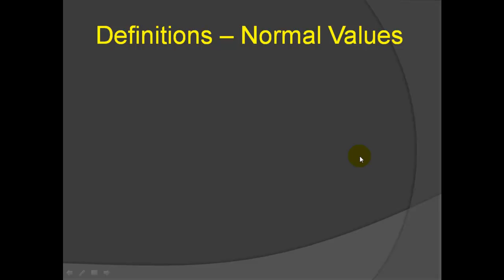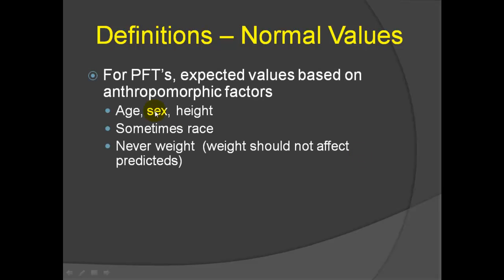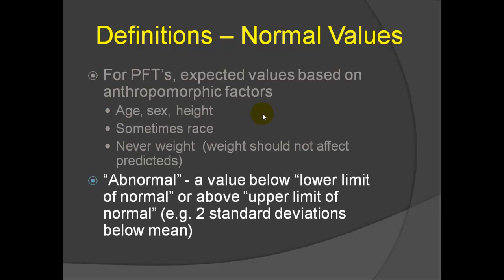Let's talk about normal values, because this is a big issue in the pulmonary lab. First and foremost, our PFT expected values are based on anthropomorphic factors: age, sex, and height, and some of the standard formulas include a race correction, because there are some anthropomorphic features of different races that change expected values. Weight never affects predicteds, primarily because if someone was to gain a hundred pounds, we wouldn't expect our lung size to change. What we mean by abnormal is not just below average. If that was the case, half of our patients would have abnormal labs. We usually use the term below the lower limit of normal or upper limit of normals, which are typically expressed as two standard deviations above or below the mean.